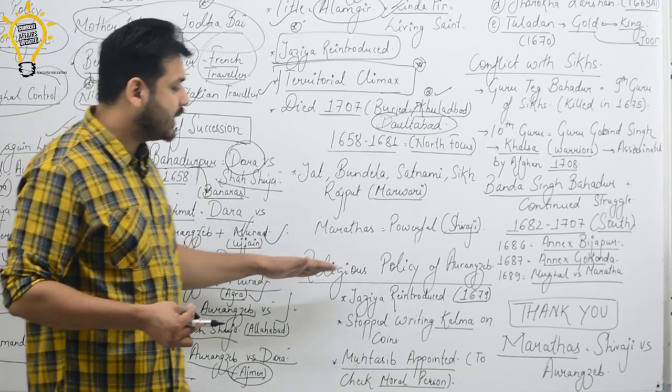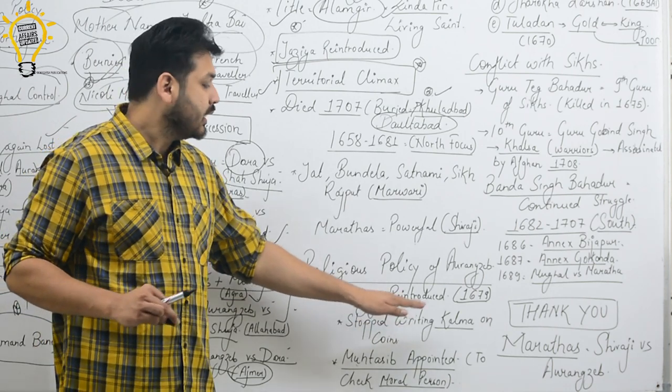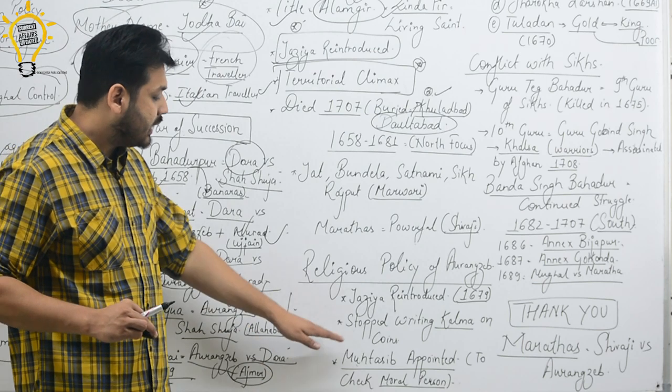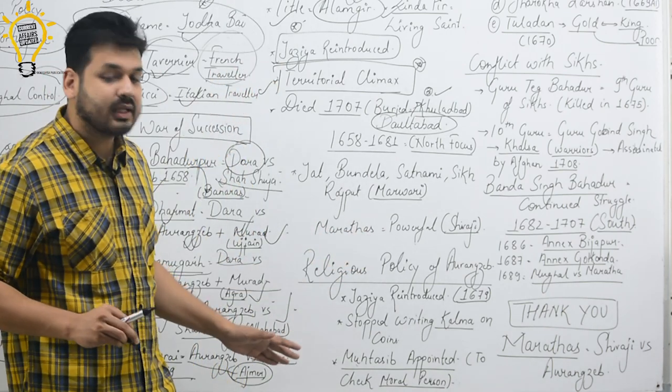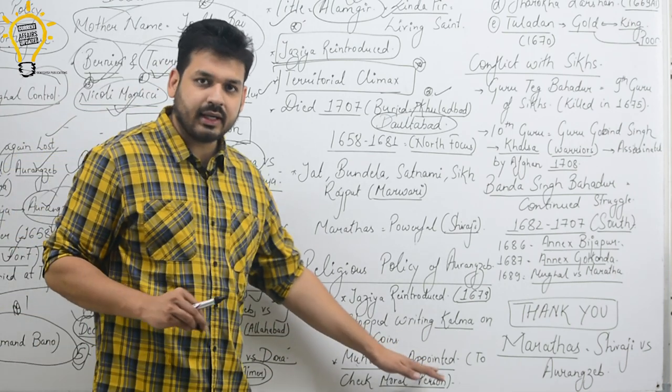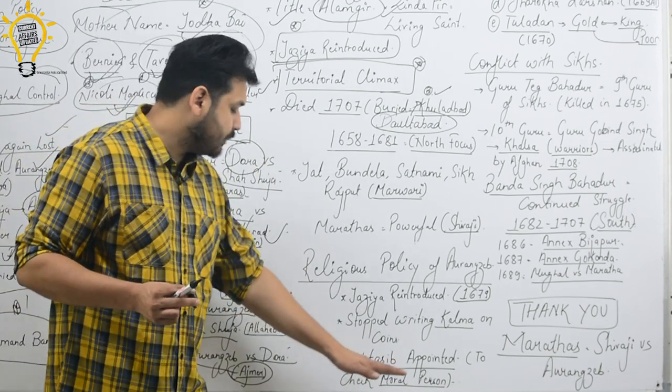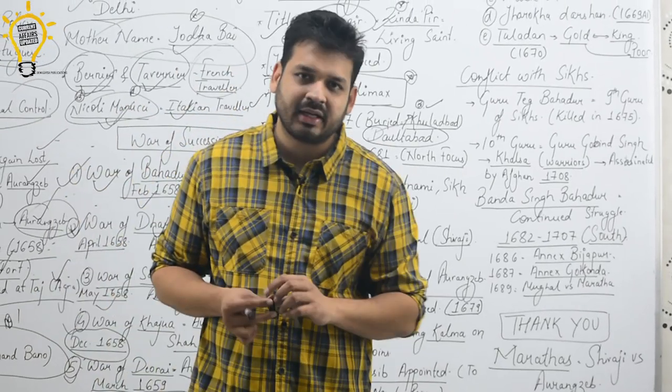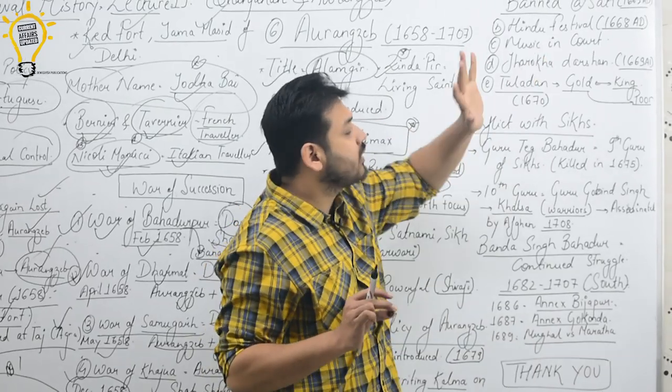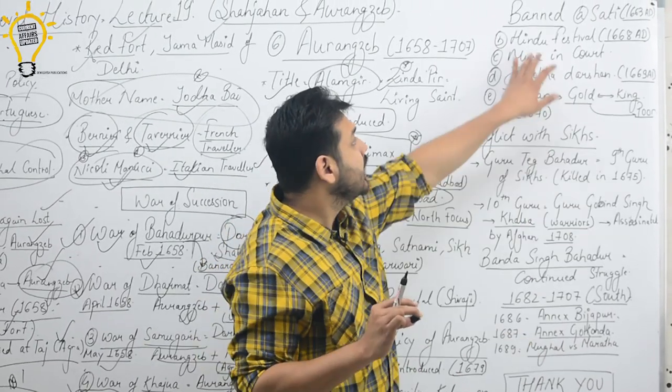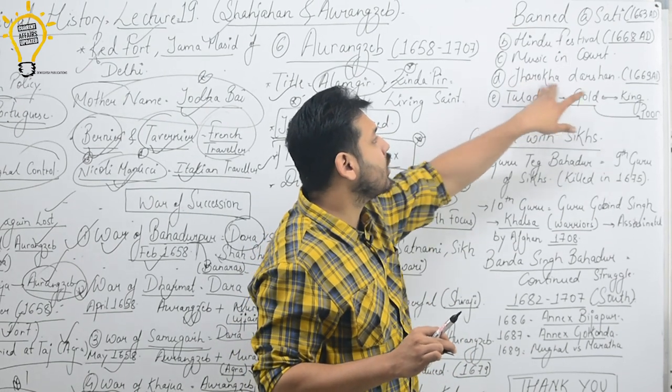Aurangzeb's religious policy is always important for exams. Jizya was reintroduced in 1679 AD. He stopped writing Kalma on coins. Muhtasib was appointed to check the moral character of people. He banned certain things: Sati was banned in 1663 AD, Hindu festivals were banned in 1668 AD, and music in court was also banned.